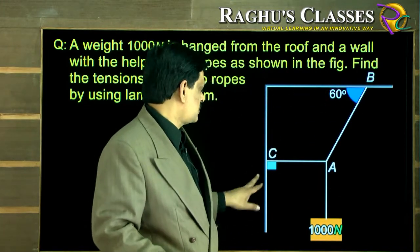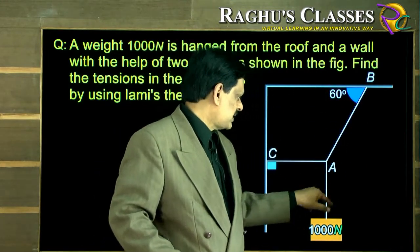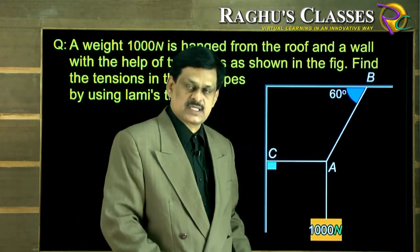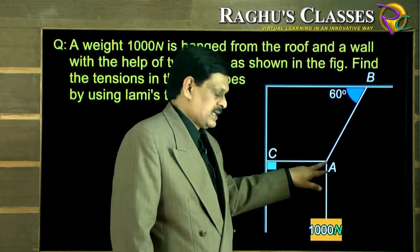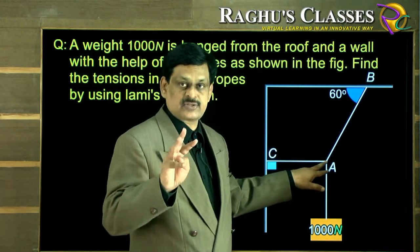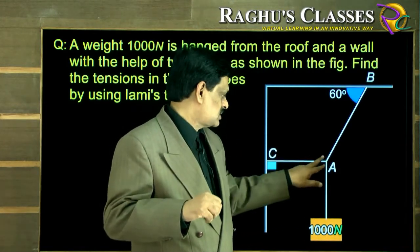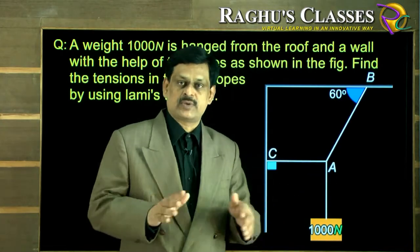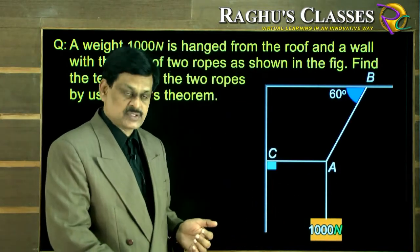So this is the roof, this is the wall, this is one wire, this is the second wire, and this is the weight hanging vertically down. The point A is under the action of three forces — the weight, the tension, and the tension — and point A is in equilibrium, so we can make use of Lambert's theorem.